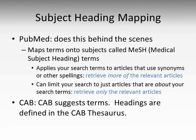Subject headings are standardized terms used by a database to refer to a concept. When each article is indexed in PubMed, an indexer labels it with a Medical Subject Heading or MeSH term. This does two things that can benefit you when you search. First, PubMed maps the terms you use onto the MeSH terms, meaning you don't have to think of all the synonyms for a concept that an author might have used. Whether you search for heart attack, cardiac infarction, or myocardial infarct, PubMed will bring you all the results indexed with the MeSH term myocardial infarction. Second, you can search MeSH terms directly — articles indexed with a MeSH term are actually about that topic, rather than just having the words appear in an abstract, which can help narrow down your search. Databases other than PubMed, like CAB, won't automatically map your search terms onto their subject headings, but they will suggest search terms that might improve your search.